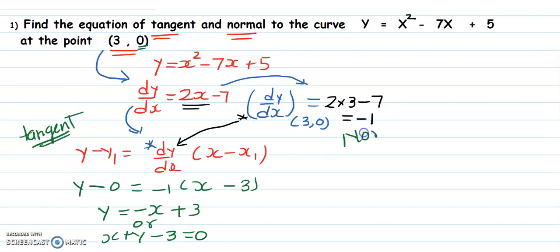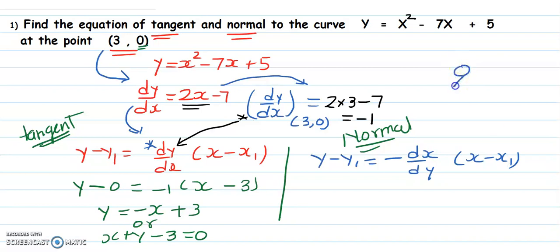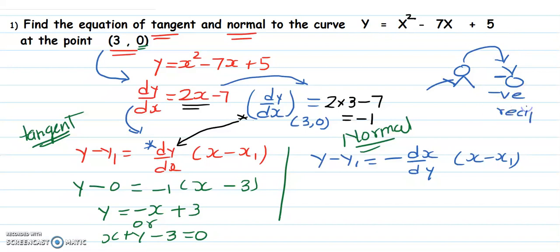For the normal, the equation is y minus y1 equals negative reciprocal of the gradient times x minus x1, that is dx over dy times x minus x1. Negative reciprocal means you flip the fraction and change the sign — if a person is standing upright, you turn it upside down and negate it.